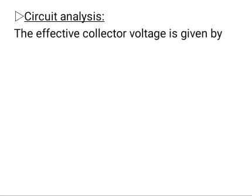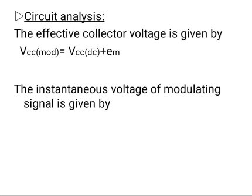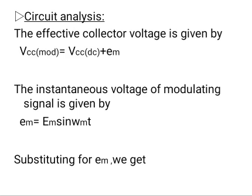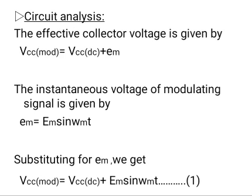In circuit analysis of the collector modulator, the information signal — that means the audio or modulating or baseband signal — is fed in series with DC power to the collector terminal. The effective collector voltage is given by: VCC_mod = VCC_DC + Em. The instantaneous voltage of the modulating signal is given by Em = Em·sin(ωm·t). Substituting for Em, we get: VCC_mod = VCC_DC + Em·sin(ωm·t) — equation 1.